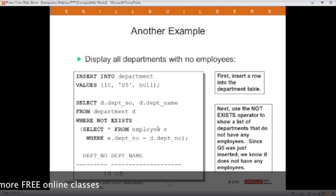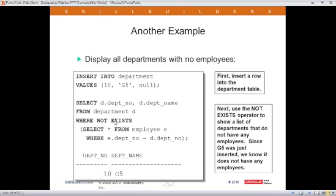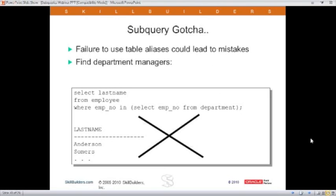It says, Department 1, are there any employees? Yes, I found some. Department 2, yes, I found some. Since it's a not exist, do not return Department 1, do not return Department 2. When I get to Department 10, are there any employees? No, there are not. Therefore, it's a not exist, so return Department 10. So that's the situation with an exists and a non-exist.